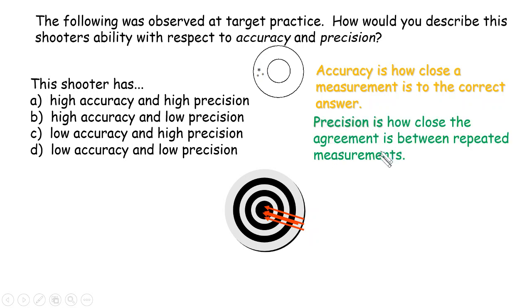What is precision? Precision is how close the agreement is between repeated measurements. For example, right here,